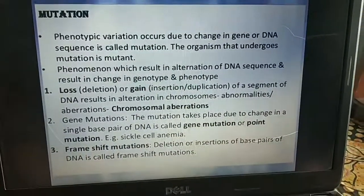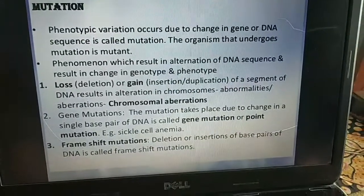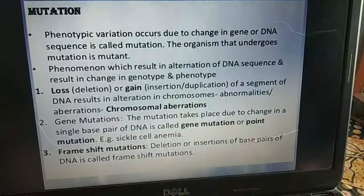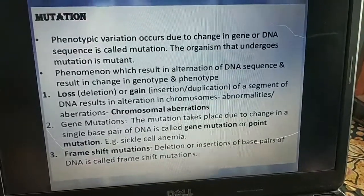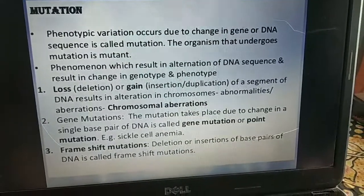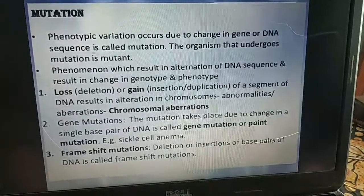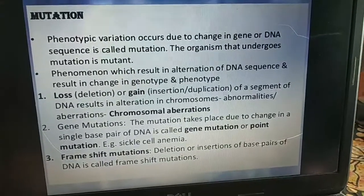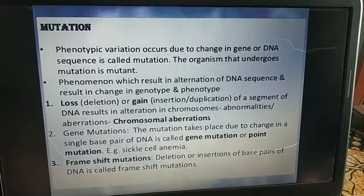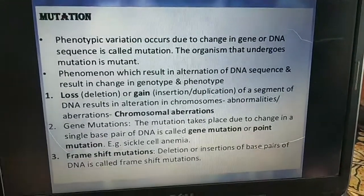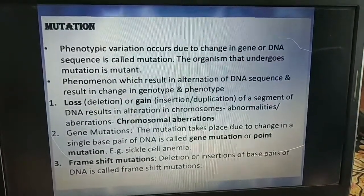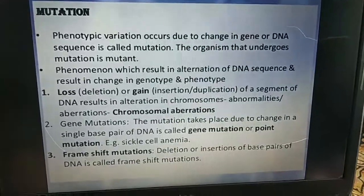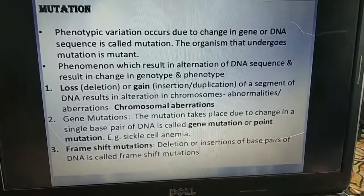In loss mutation, deletion of a DNA sequence takes place. In gain mutation, some DNA segments are inserted or duplicated in a chromosome. These abnormalities are called chromosomal aberrations. If these changes are positive they are called positive variation or positive evolution; if these changes are negative they are called chromosomal aberrations or abnormalities. We will discuss chromosomal aberration and chromosomal abnormalities in a later part.